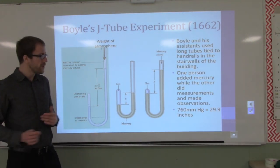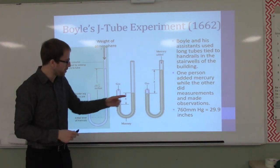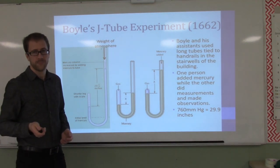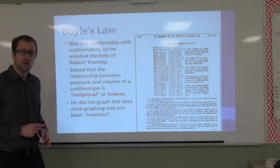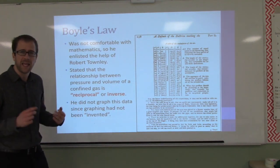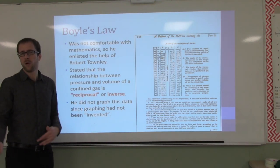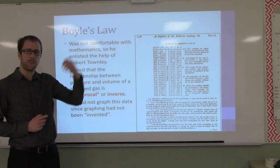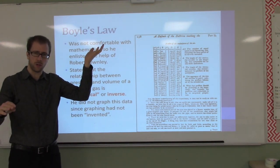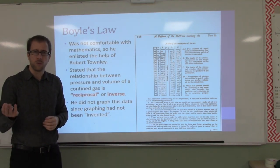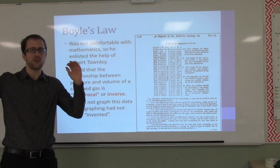Why is this? Well, the weight of mercury was going up, so the pressure experienced on that gas went up as well. Back in the day they didn't have graphing yet, so they plotted all of this data in a table of values. They analyzed it and said these things are inverse — pressure and volume are inverse. As pressure goes up, volume will go down. And if volume goes up, pressure must have gone down. They are inversely proportional.